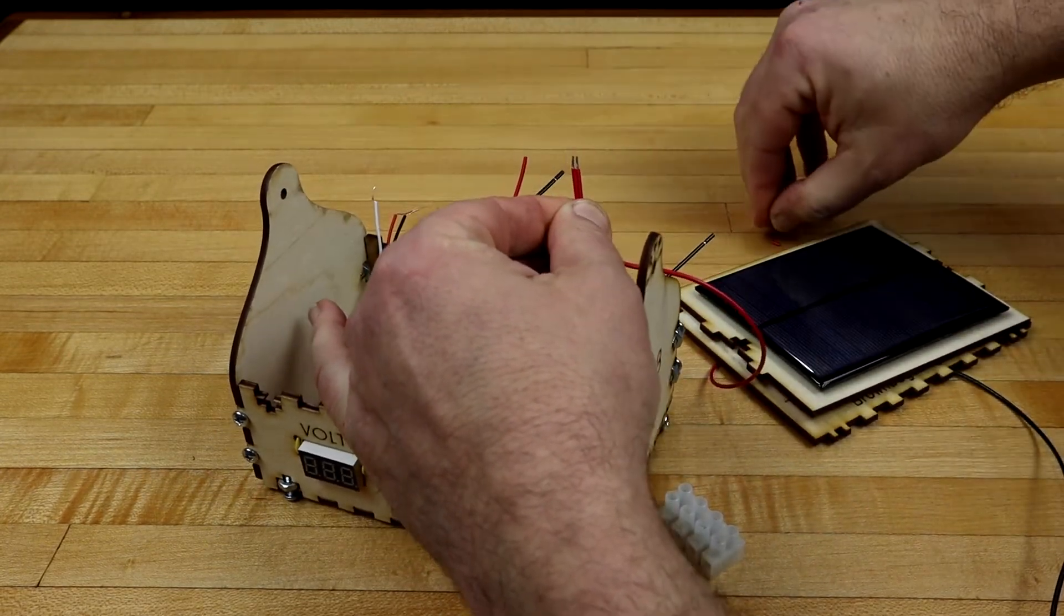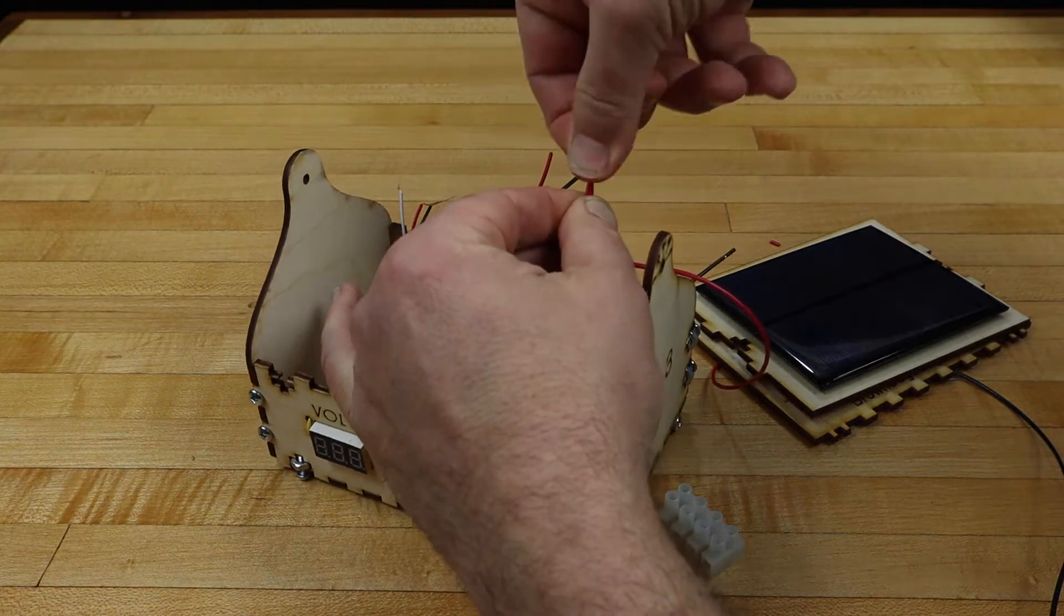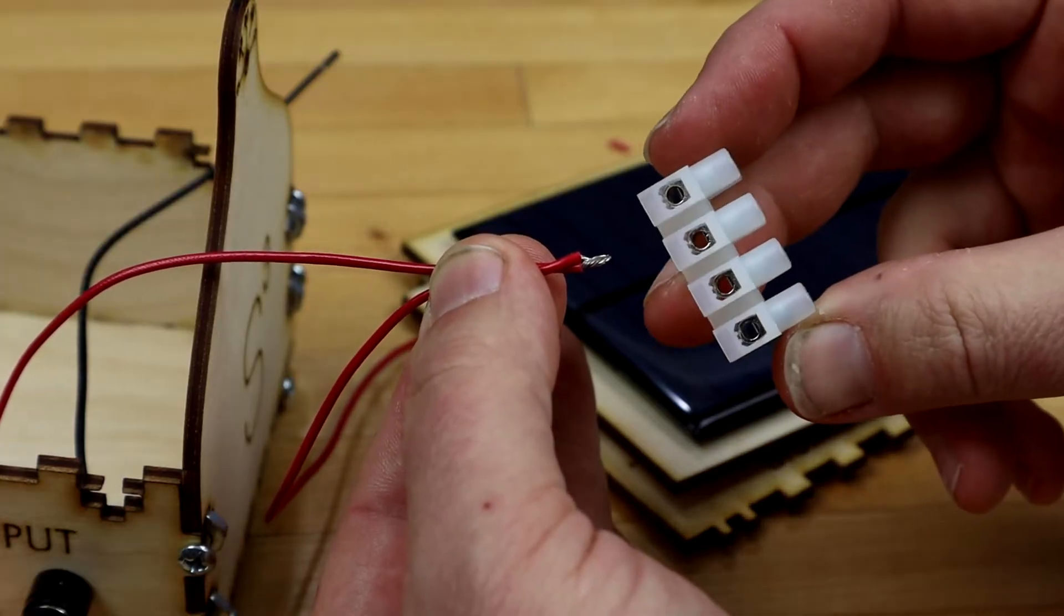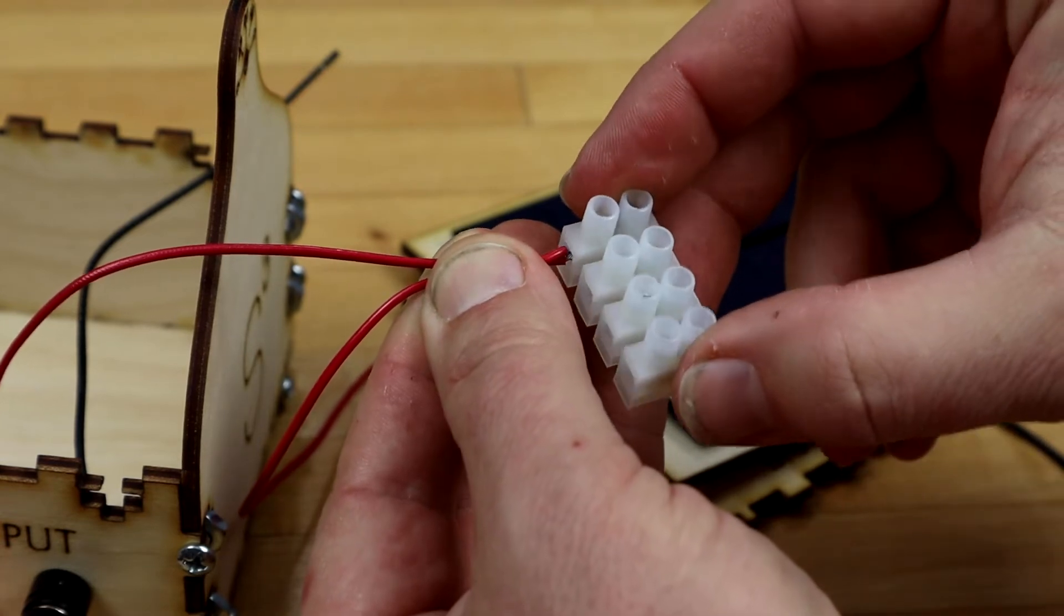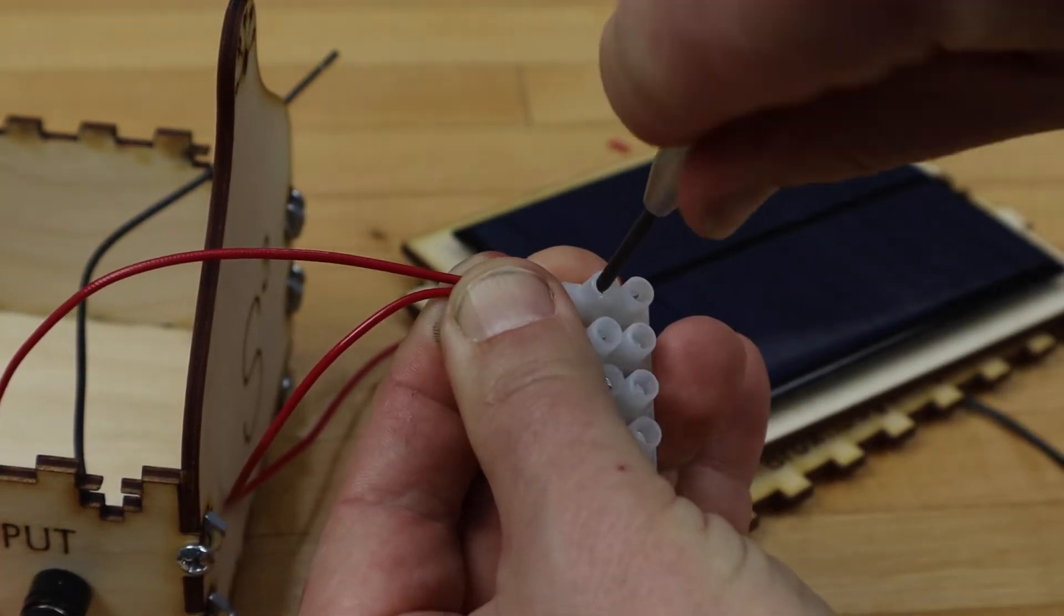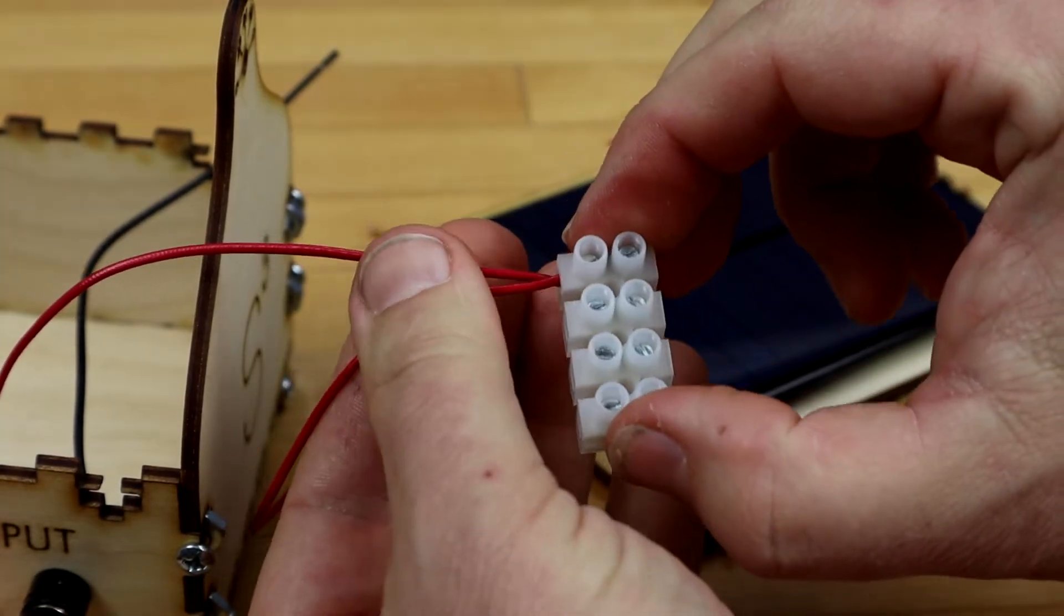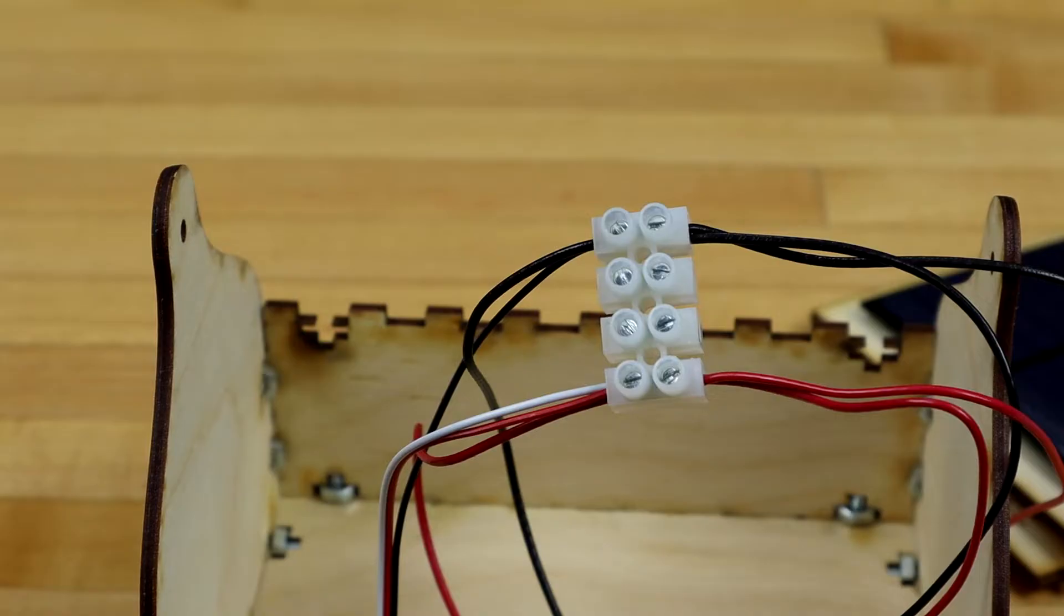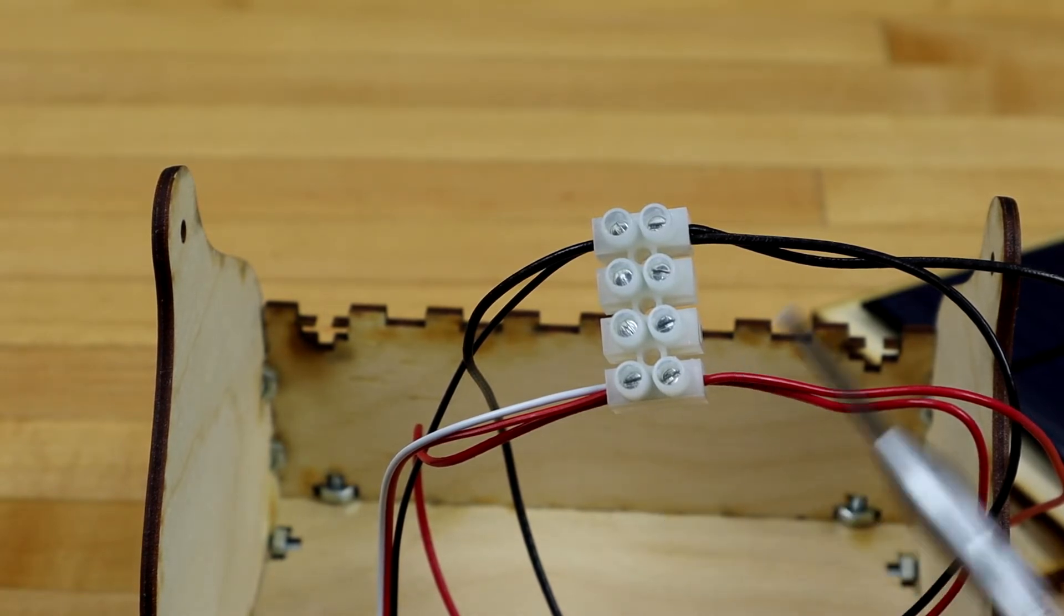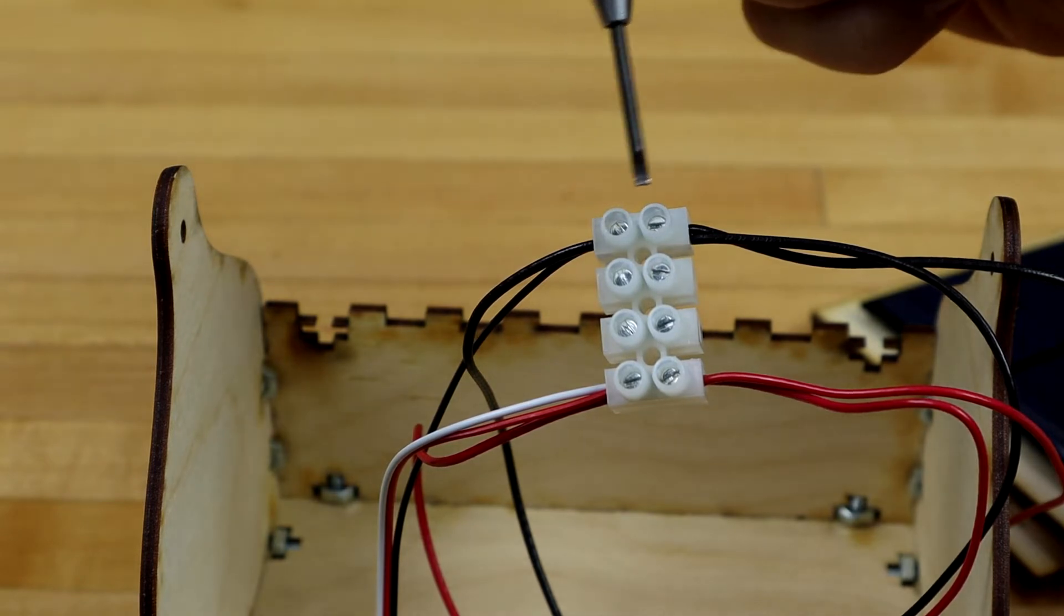Then we'll place them into one end of the terminal block and tighten down the screw. Do the same with the rest of the wires. When you are done, the terminal block should look like this, with the positive wires at one end and the negative at the other.